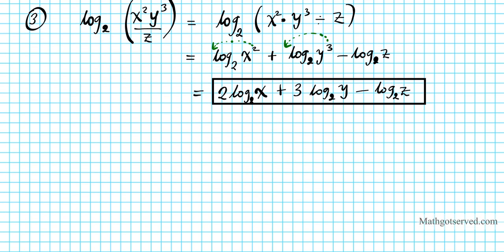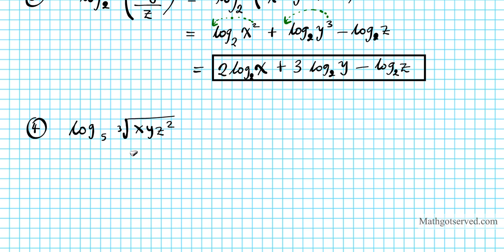Let's move on to question number four. We're going to expand log base five of the cube root of x times y times z squared. In order to use the power property, we need to express this radical as a power. Using the nth root property of exponents, the cube root becomes the one-third power. So we have log base five of x times y times z squared, everything raised to the one-third power.